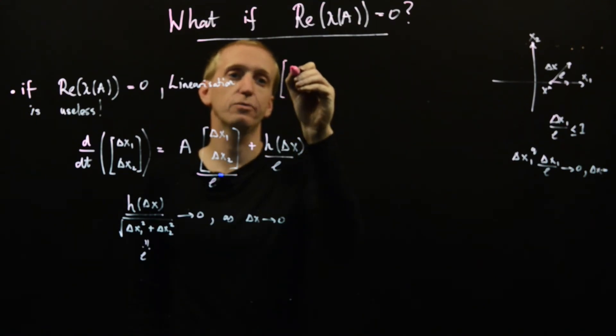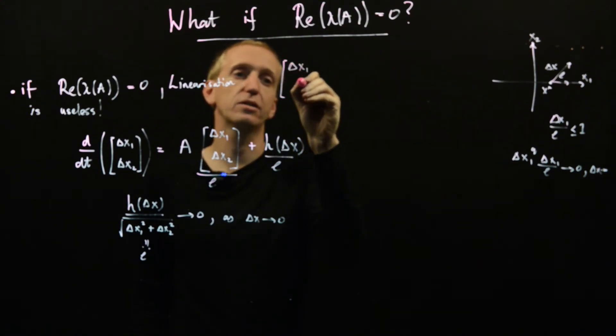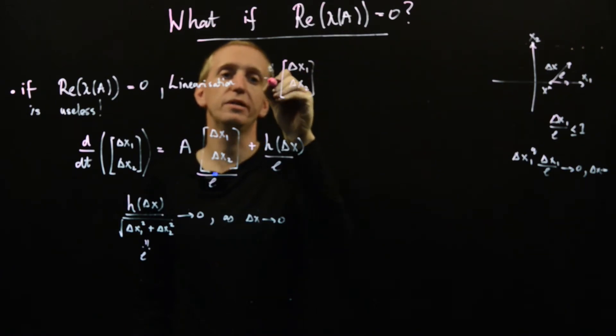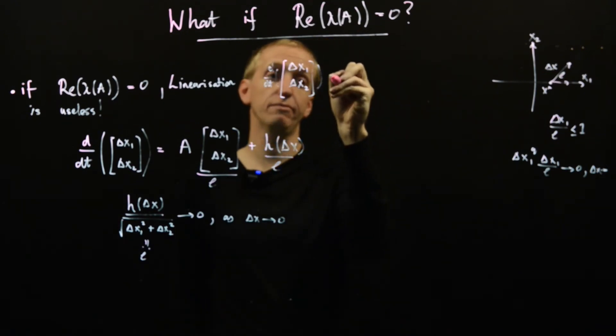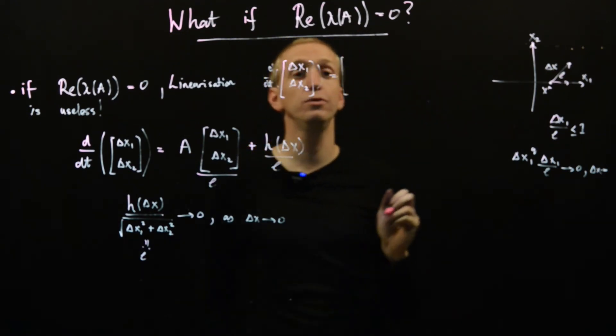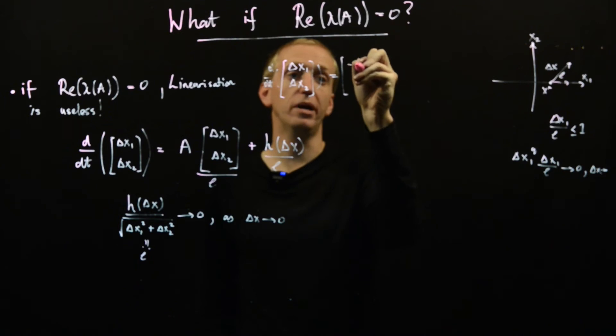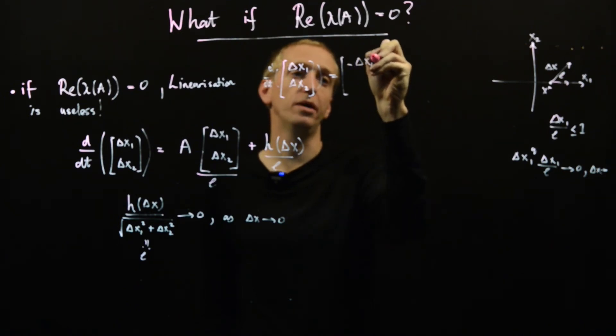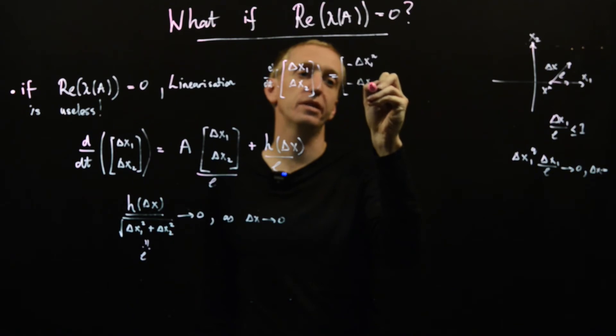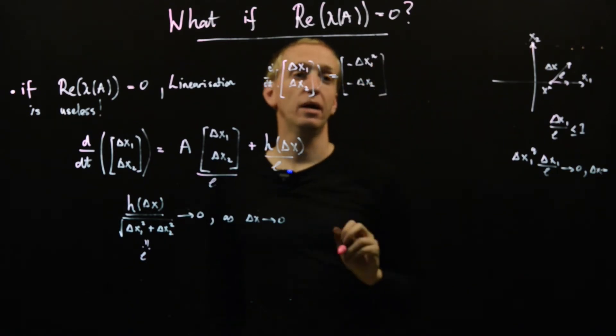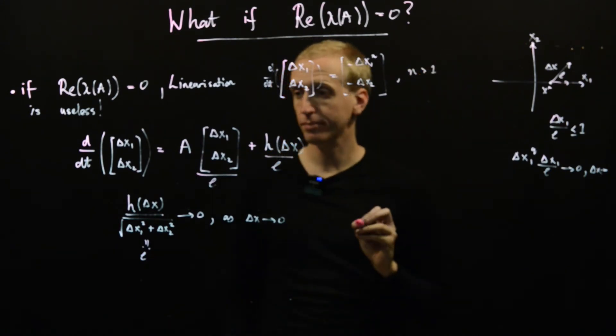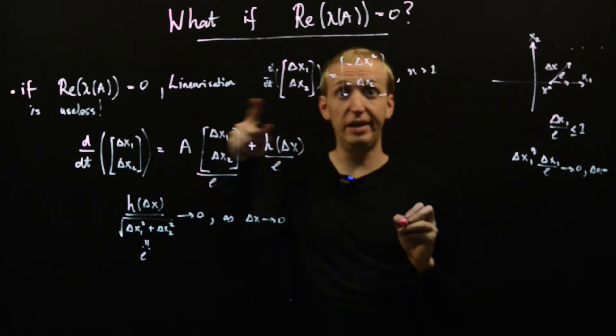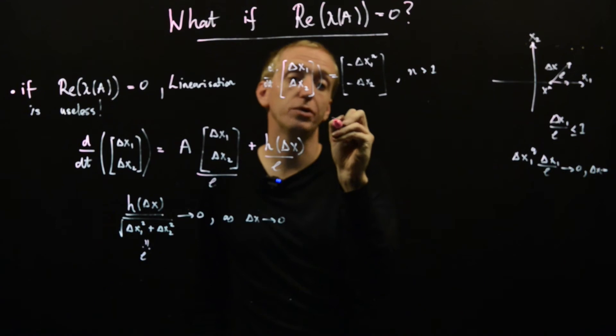let's suppose that we have delta x1, delta x2, d by dt as normal. And let's just say that this is equal to, and then let's put minus delta x1 to the n, and let's have minus delta x2. And let's just say that n is bigger than one.